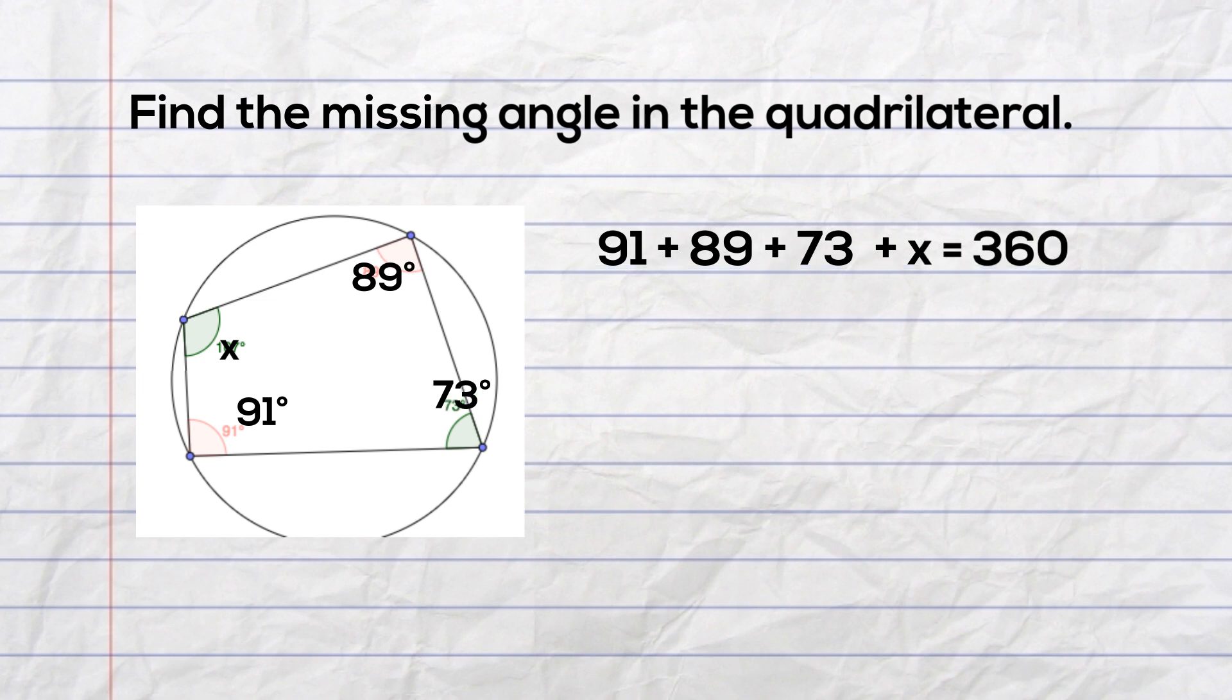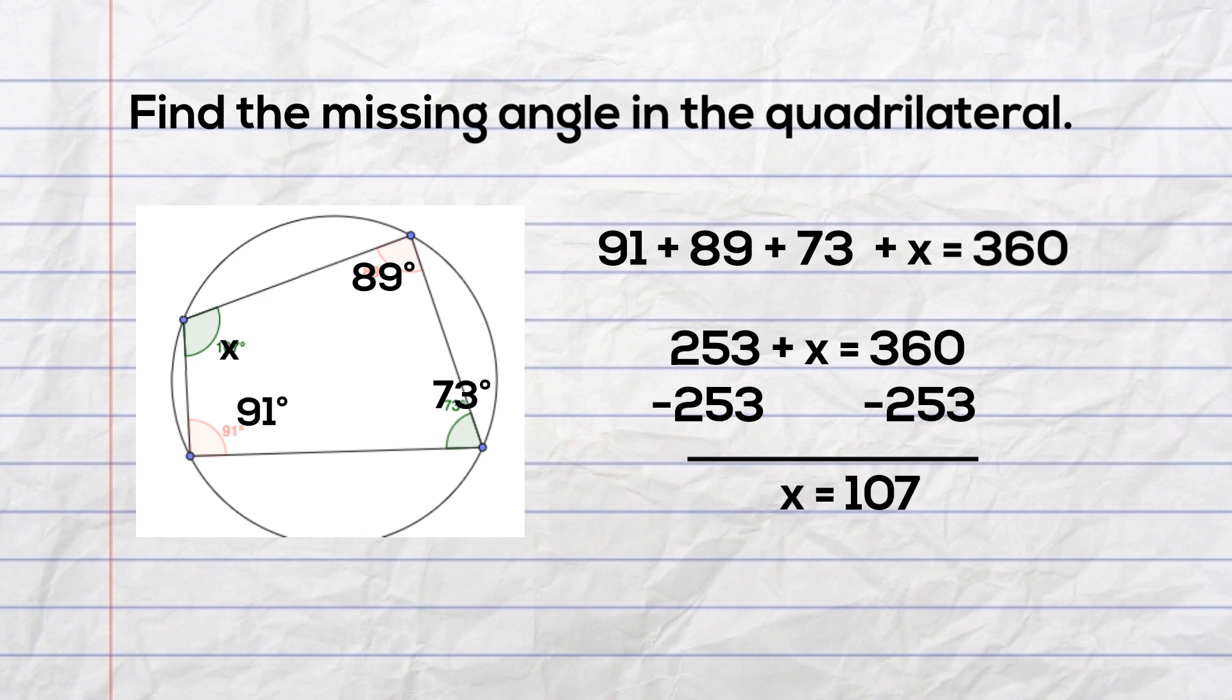Next, we will combine like terms. 91 plus 89 plus 73 equals 253. We will isolate X by subtracting 253, and when we bring down the numbers, X is equal to 107. So the missing angle is 107 degrees.